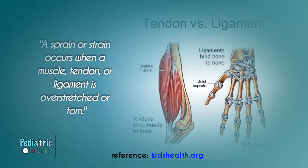A sprain or strain occurs when a muscle, tendon, or ligament is overstretched or torn. Tendons are what connect our muscles to our bones, and ligaments are what hold our bones together and stabilize our joints.